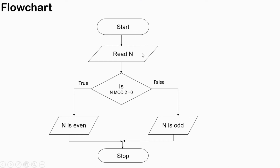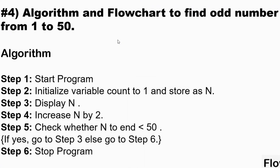Now in the flowchart we will start, then read a number N, and it will go to the decision: is N mod 2 equals zero? If we divide N by two and the remainder is zero — true — then it will display 'N is even'. Otherwise if the condition is false, it will display 'N is odd'. Then the program will stop.